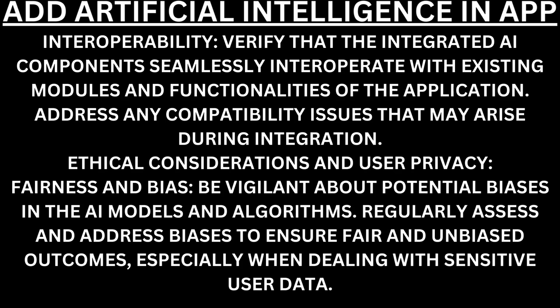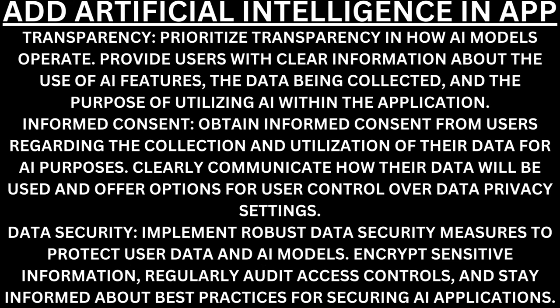Ethical considerations and user privacy. Fairness and bias. Be vigilant about potential biases in AI models and algorithms — regularly assess and address biases to ensure fair and unbiased outcomes, especially when dealing with sensitive user data. Transparency. Prioritize transparency in how AI models operate — provide users with clear information about the use of AI features, the data being collected, and the purpose of utilizing AI within the application. Informed consent. Obtain informed consent from users regarding the collection and utilization of their data for AI purposes — clearly communicate how their data will be used and offer options for user control over privacy settings.